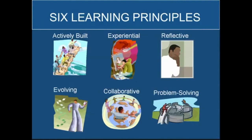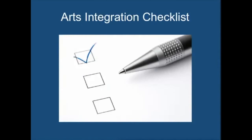Arts Integration practices six learning principles. It offers active, hands-on learning with authentic problems for students to solve. It draws on students' experiences and prior knowledge. Students have opportunities to reflect about what they are learning, and the learning evolves as they increase in skill and ability. The Kennedy Center has provided an Arts Integration Checklist to help. The items can help teachers identify when their approach to teaching is indeed integrated.